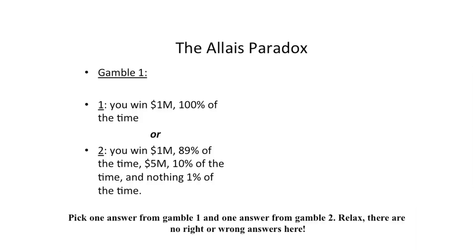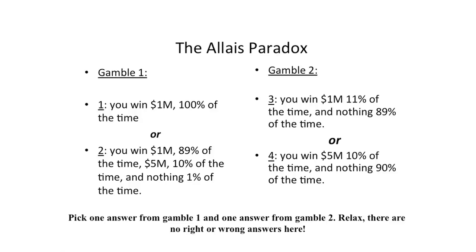Then he said, if I'm going to figure this out, I need to give them another gamble. So he constructed a second gamble. What you want to choose in your notes is either three or four — there's no right or wrong answer. Gamble three is an 11% chance of winning a million dollars but an 89% chance of nothing. And gamble four is a 10% chance of five million and a 90% chance of nothing. Just whichever one you happen to like, jot it down.